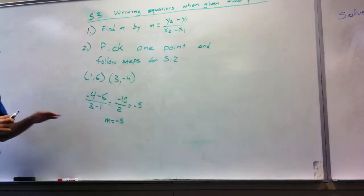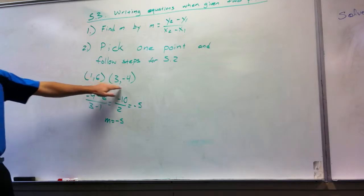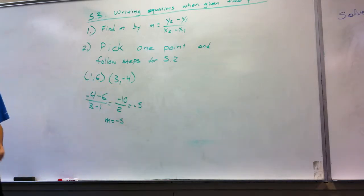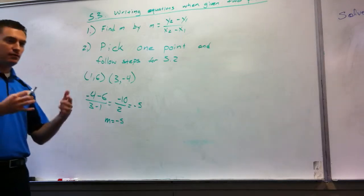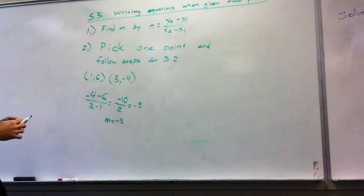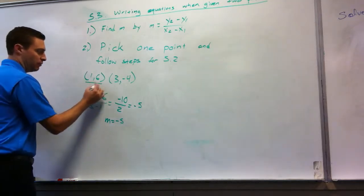So now I have m and two points. So what am I going to do? Pick one point. Which point would you pick? I would pick (1,6). It doesn't have a negative there. Maybe something we can avoid later on.